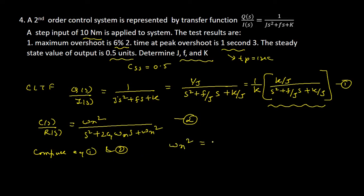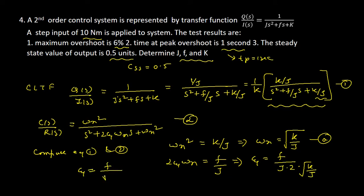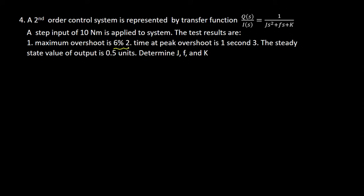Comparing equations one and two, we find that ωn² = K/J, so ωn = √(K/J) — call this equation (a). Also, 2ζωn = f/J, which gives ζ = f / (2 · √(K/J)) = f / √(KJ). Call this equation (b).